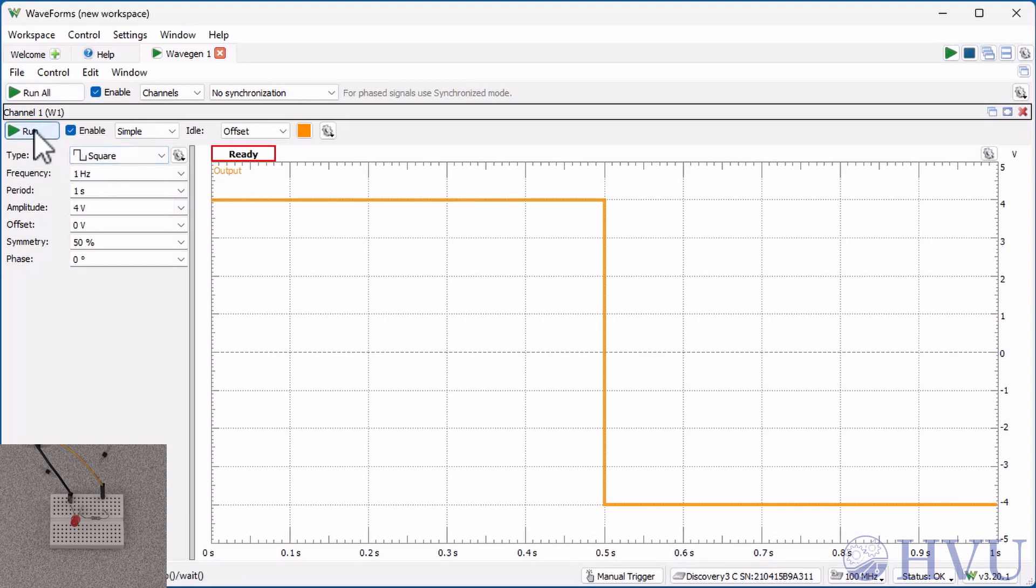To apply power, click on Run. The LED seems to be flickering at the correct rate. You can easily change the rate at which the LED flickers by changing the frequency of the applied square wave.